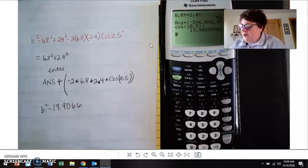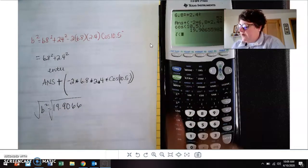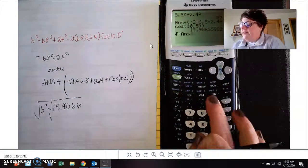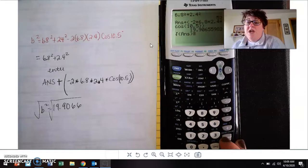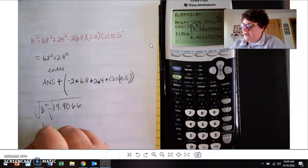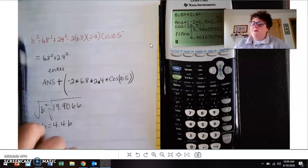And then from there, you want to remember and take the square root of that. So second and your square root button wherever that is, and then second and answer. Use that answer key, especially if you're going into science. You're definitely going to want your error to be small, and so you want to make sure to do that. You should get side B to be 4.46.